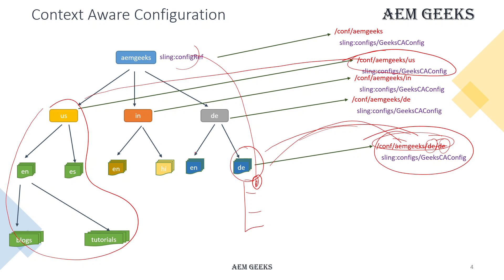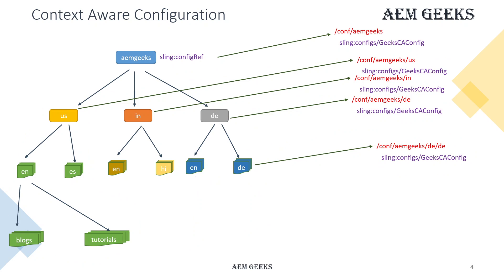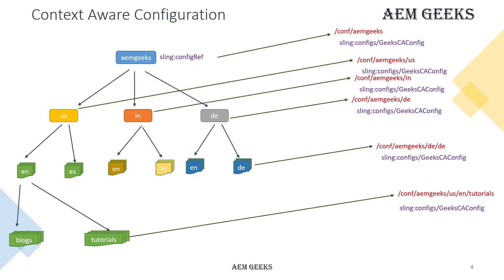All English pages will pick configuration from the parent, while the German site picks from its German-specific configuration. One important point: context-aware configurations are resolved from child hierarchy to parent hierarchy — top to bottom. If I need a different configuration for a US English tutorial subsection, I create another folder with that configuration and refer to it from the subsection level.